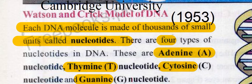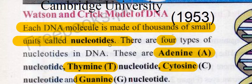What was this model? Each DNA molecule is made up of thousands of small units called nucleotides. They studied the structure of DNA and knew that in a DNA molecule there are thousands of such small units, which are nucleotides.